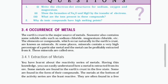Occurrence of metals: The Earth's crust is the major source of metals. Sea water also contains some soluble salts such as sodium chloride and magnesium chloride. The elements or compounds which occur naturally in the Earth's crust are known as minerals. At some places, minerals contain a very high percentage of a particular metal and the metal can be profitably extracted from it — these minerals are called ores.